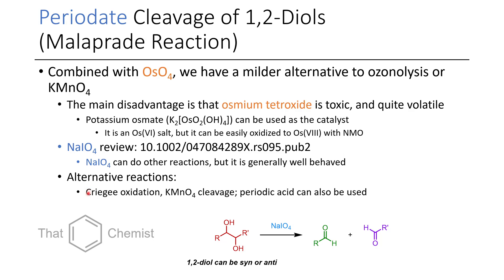If you wanted to do the same transformation with different conditions, you could use Criegee oxidation, which uses lead tetraacetate, though we typically try to avoid heavy metals. You could also use potassium permanganate, but as we know, potassium permanganate is a sledgehammer and can do many other reactions. Finally, it's worth noting that periodic acid works quite well also.